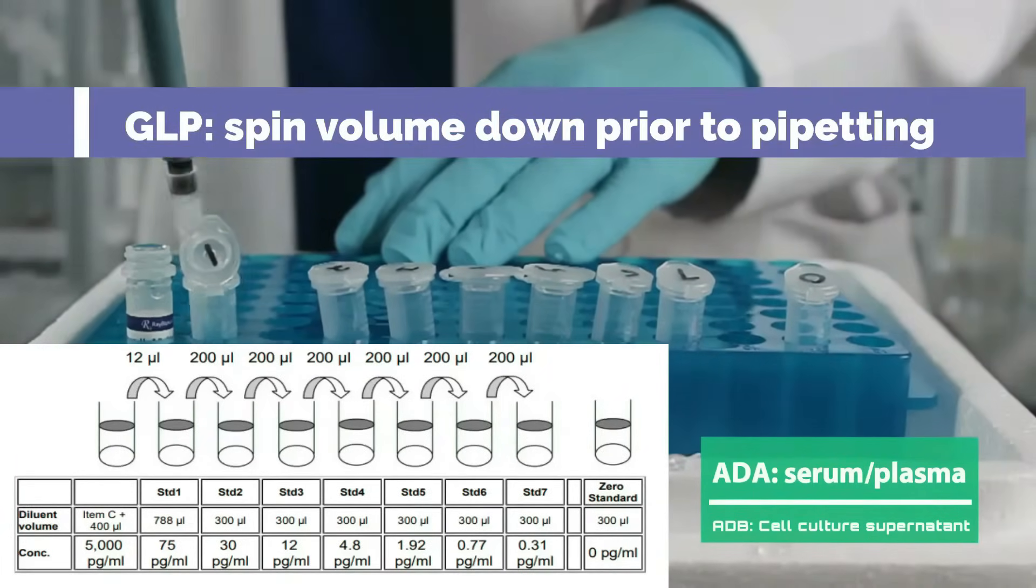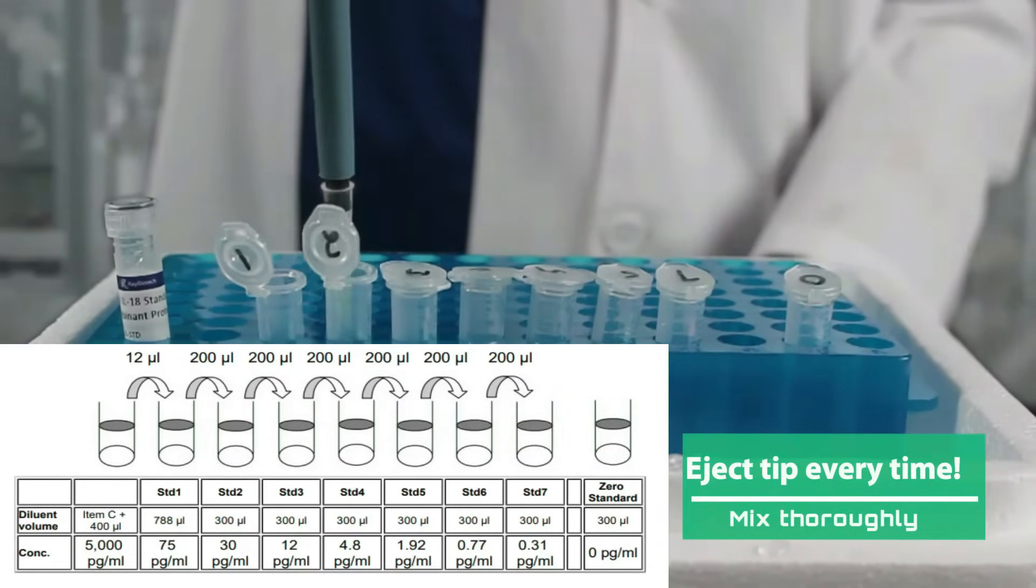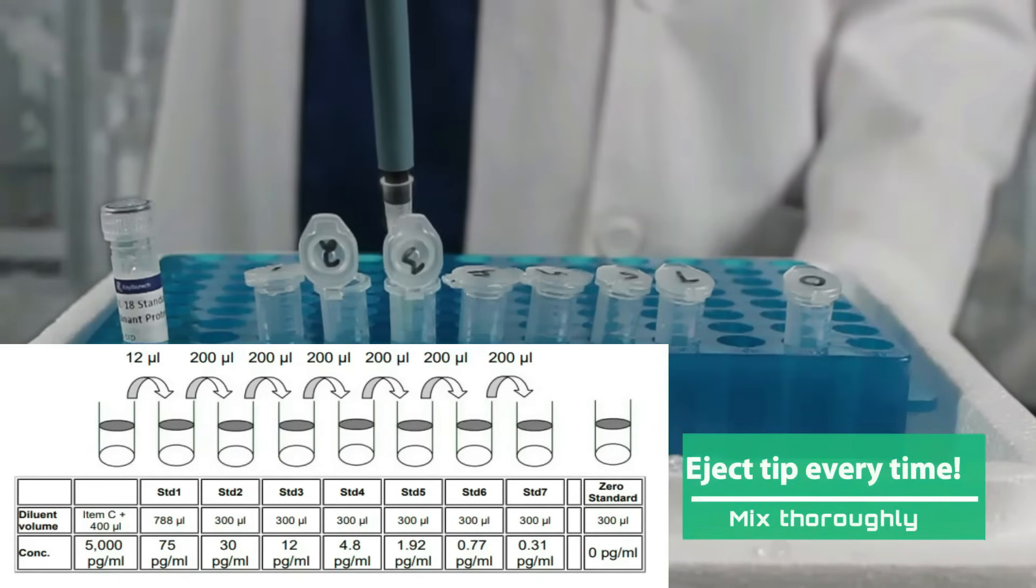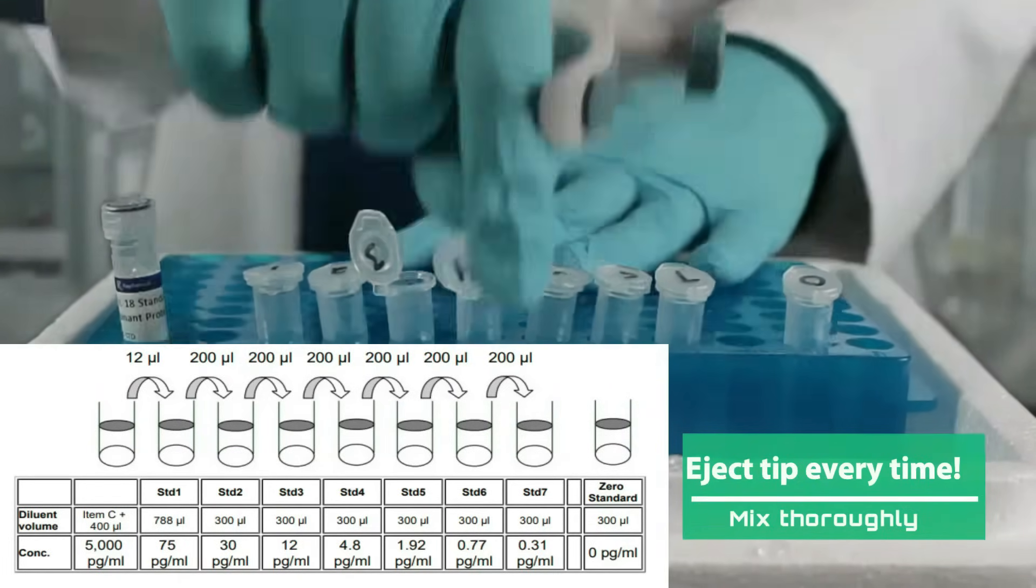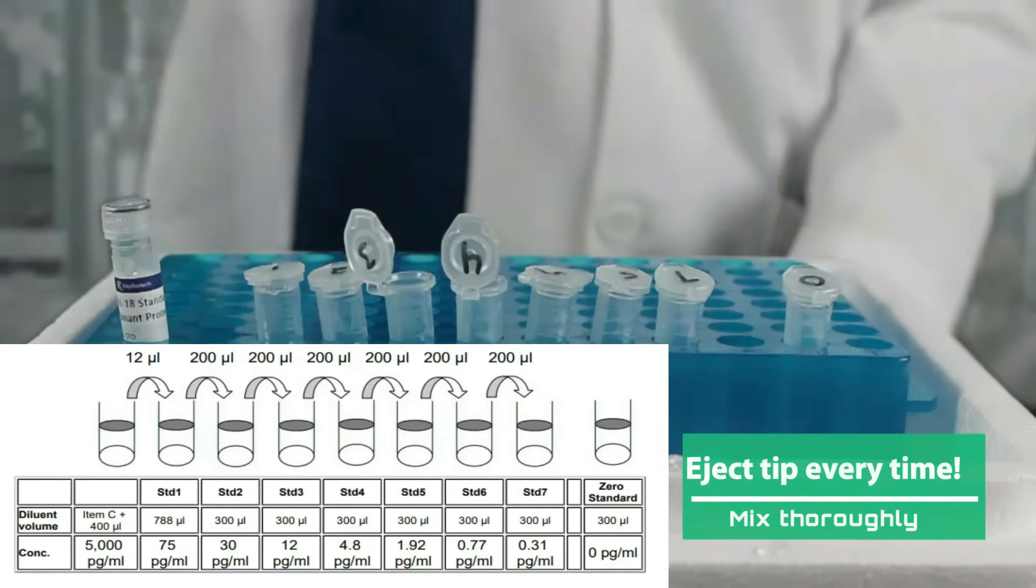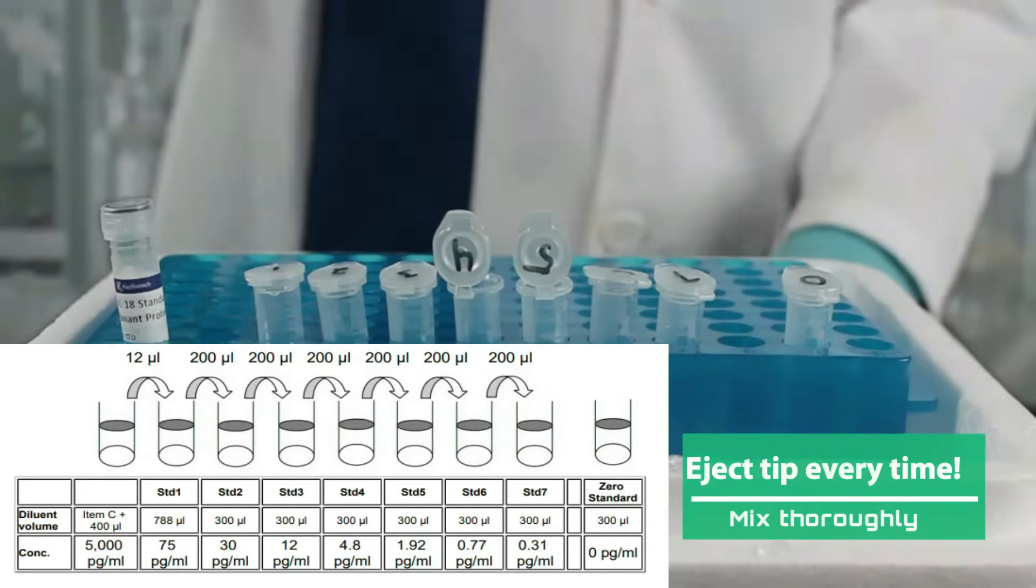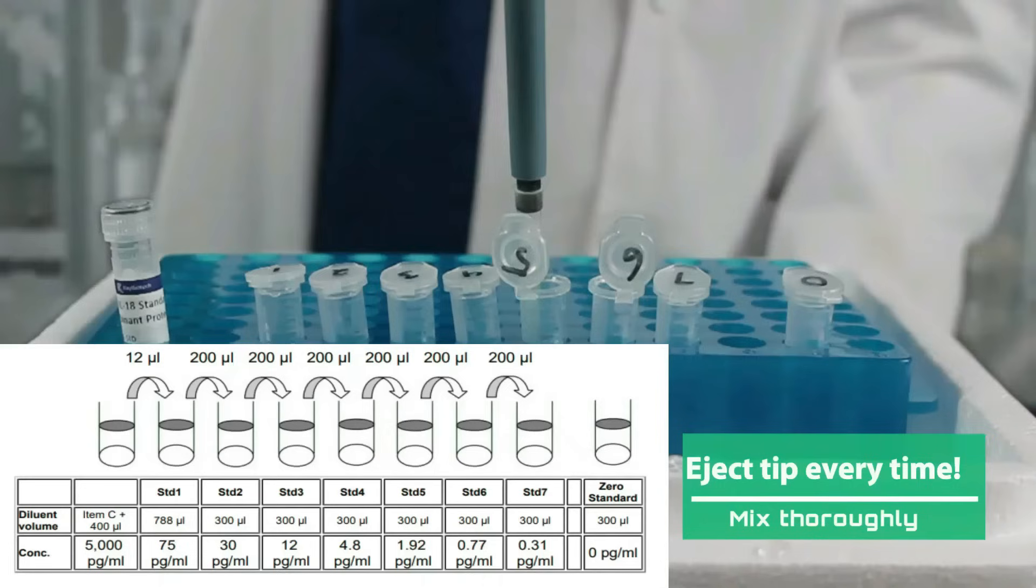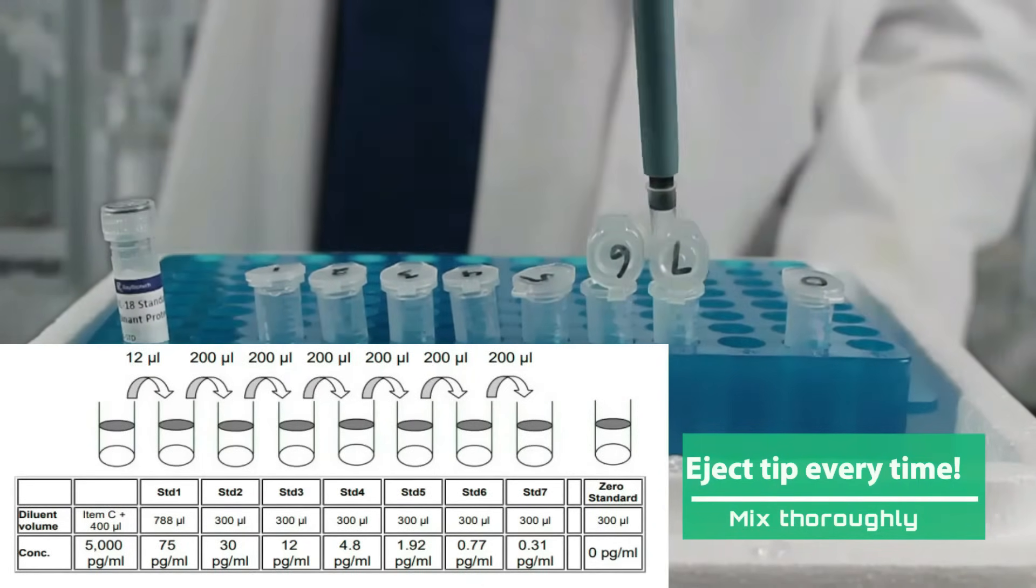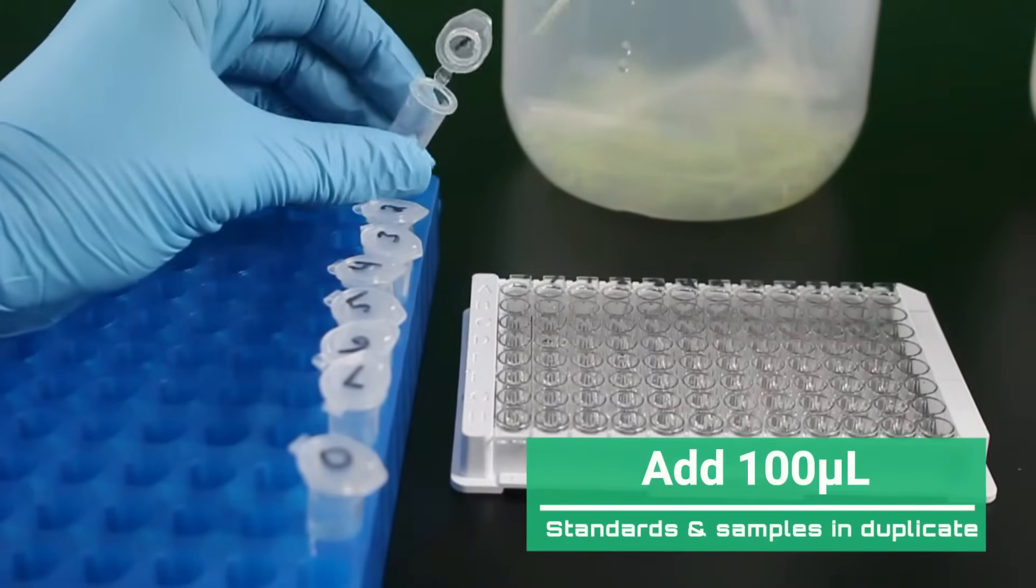Pipette 12 microliters of stock solution into standard 1. Mix thoroughly and gently with repeated pipetting at least 10 times. Eject the tip, carry 200 microliters from standard 1 to standard 2, mixing thoroughly and gently again with repeated pipetting at least 10 times. Eject the tip and repeat the step until standard 7. Eject the tip each time so the high concentration of tube 1 does not influence the concentration of tube 7 incidentally. Keep the zero separate to prevent accidental passage from the standard.